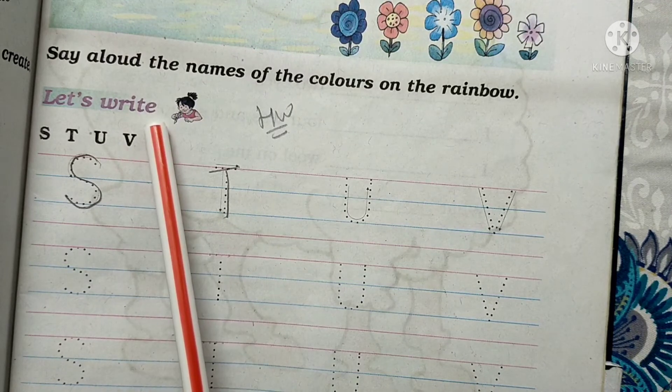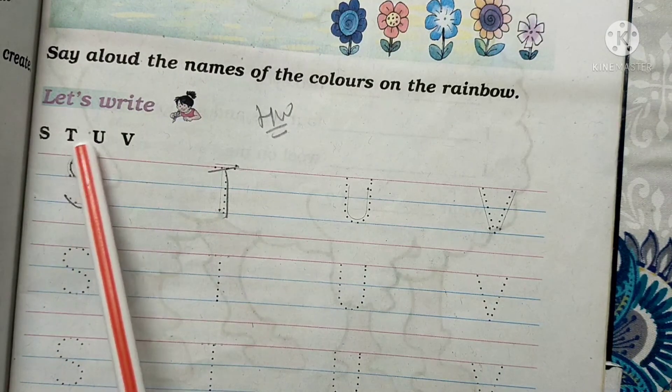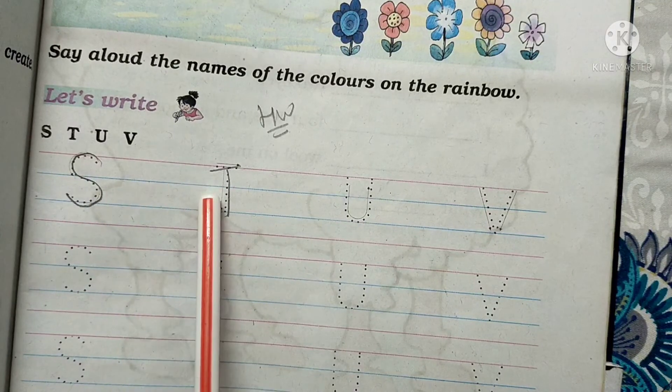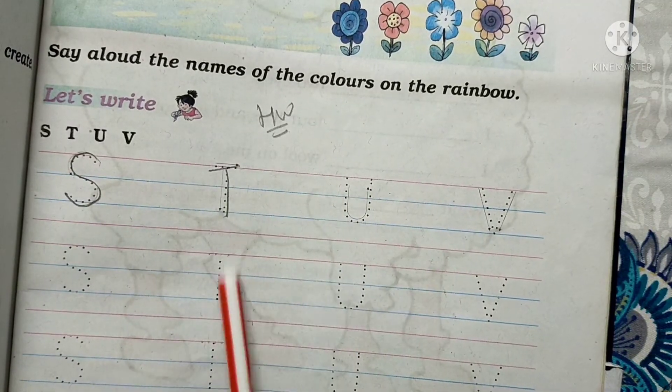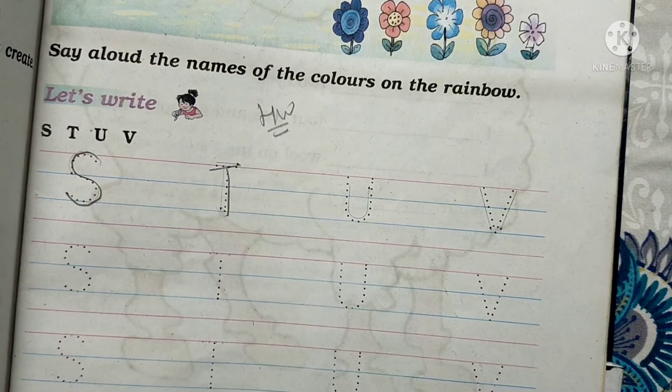Then let's write. What you have to do? S, T, U, V you have to write. So just trace it and complete it. This one is also homework for you.